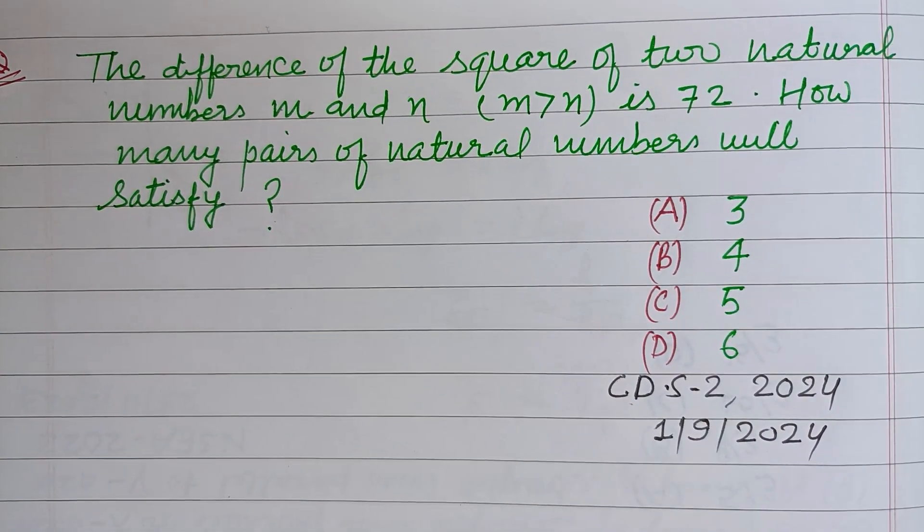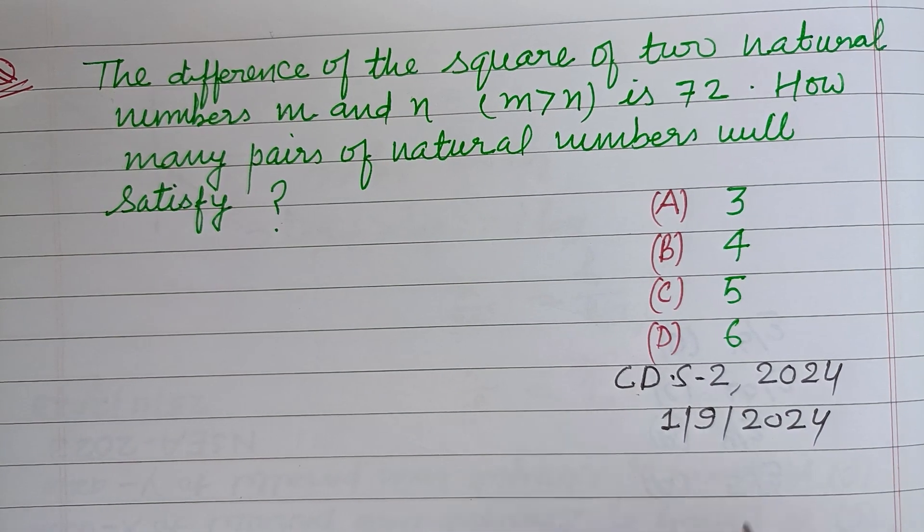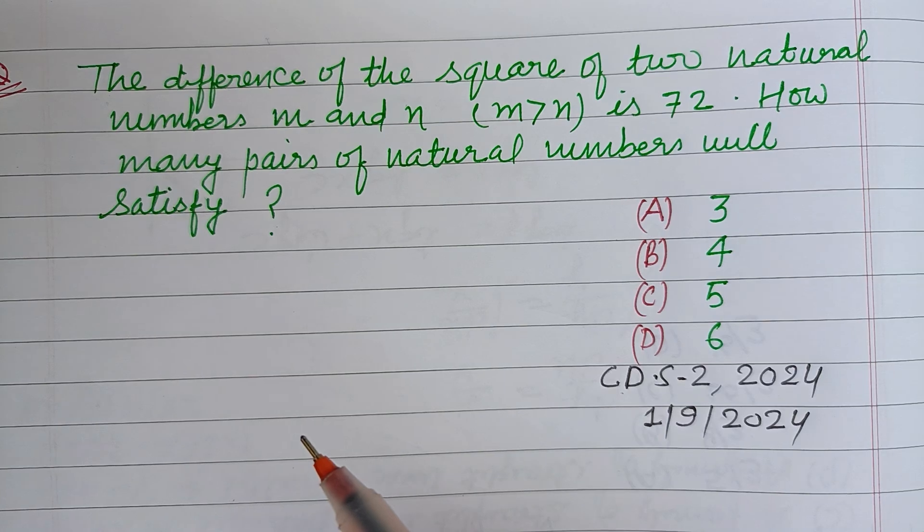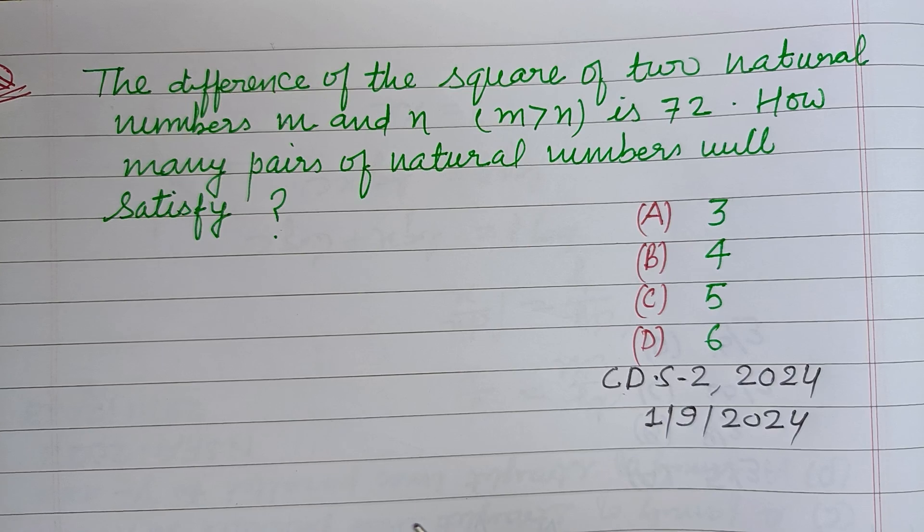Hello viewers, warm welcome to this YouTube channel. This is a question from CDS 2024. The difference of square of two natural numbers m and n, where m is greater than n, is 72.